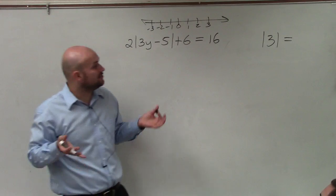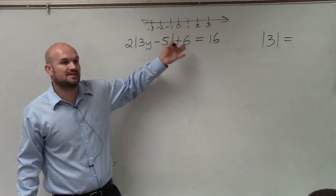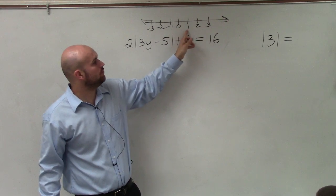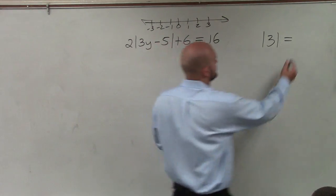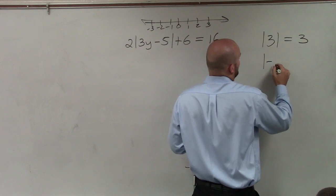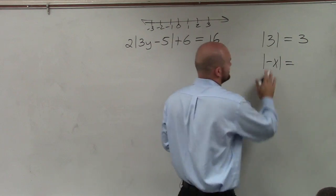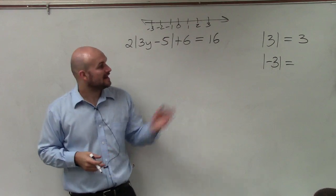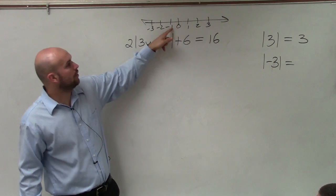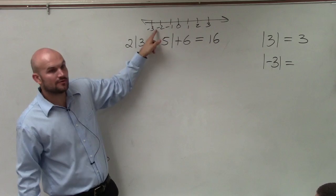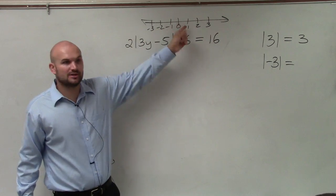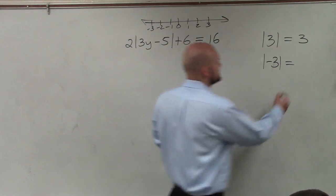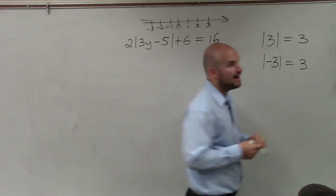The absolute value means the absolute distance from 0. So for 3, that has an absolute distance of 1, 2, 3. And the absolute value of negative 3 is again 1, 2, 3. We know it's in the negative direction, but we still moved over three units to the left. So the absolute distance is positive 3.